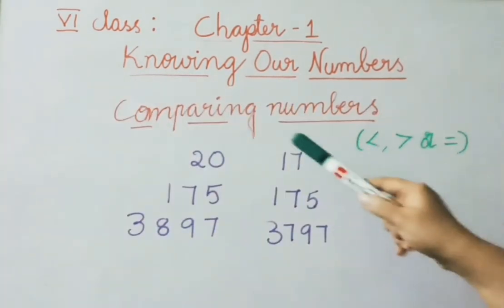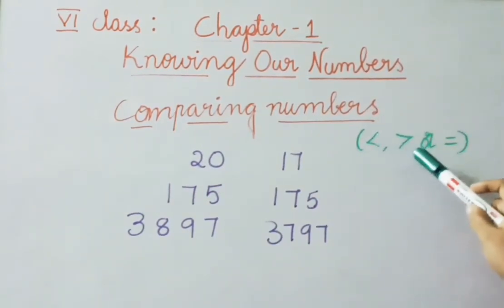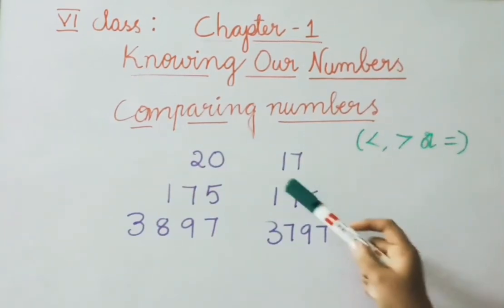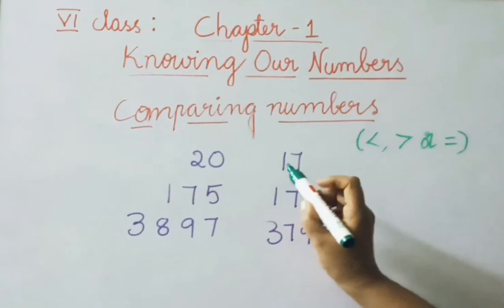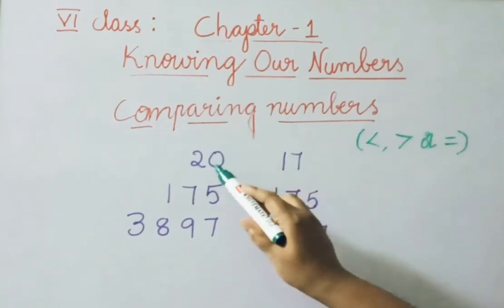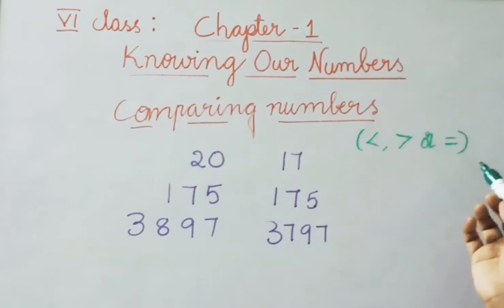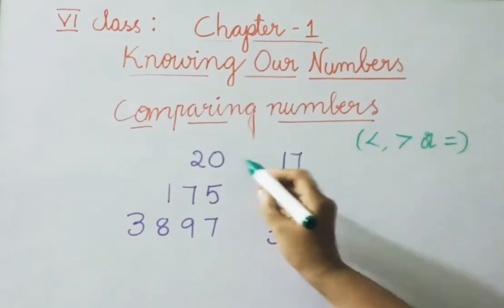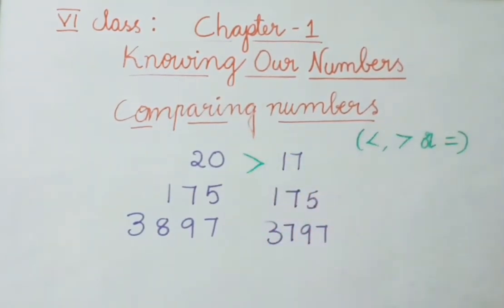See next: comparing numbers. How do we compare numbers? By using the symbols less than, greater than, or equal to. See the first example: 20 and 17. 20 is greater and 17 is less, so obviously we use the greater than symbol — 20 is greater than 17.